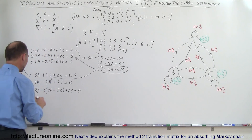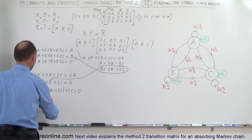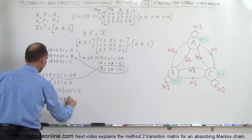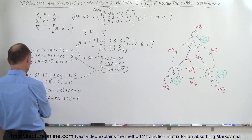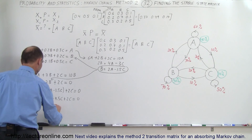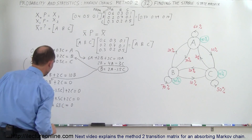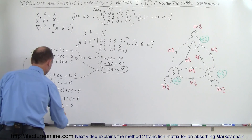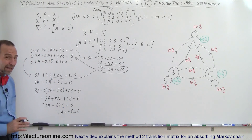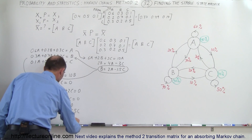Now combining like terms: 3A − 6A = −3A, and −3(−1.5C) = +4.5C, plus 2C gives 6.5C. So we get −3A + 6.5C = 0, which means −3A = −6.5C. Dividing both sides by 3 gives A = 6.5/3 · C, and multiplying top and bottom by 2 gives A = 13/6 · C.